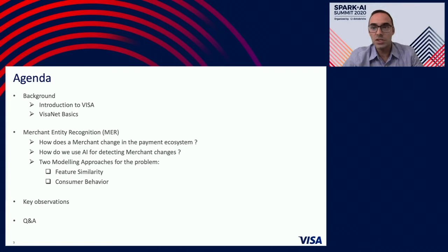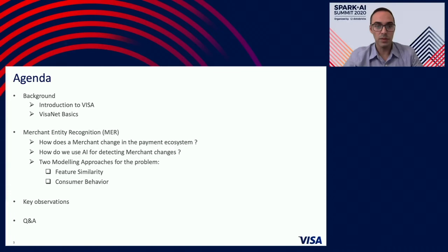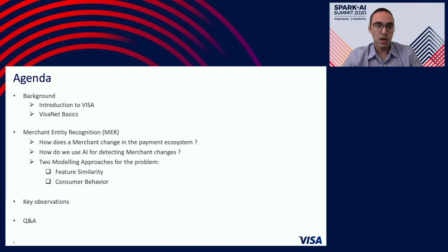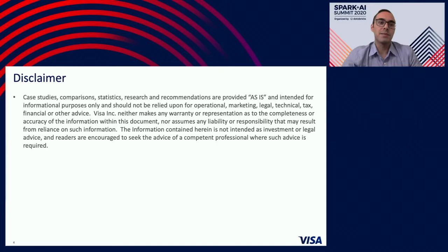We'll talk about how merchant changes in the payment ecosystem, and how we are using AI to detect the merchant changes. Specifically, we have two modeling approaches for the problem. The first one is called feature similarity, based on similarity between merchant profiles. The second is called consumer behavior, a complementary approach. I will be covering the first approach, and my colleague John will cover the second approach. Then we'll look at some key observations, followed by Q&A. All statistics, research, and recommendations provided today are for informational purposes. Visa does not assume any responsibility or liability that might arise from using this information.